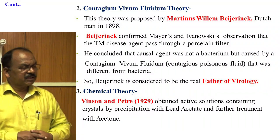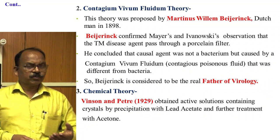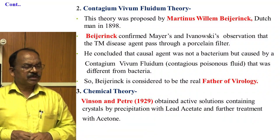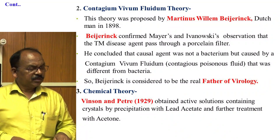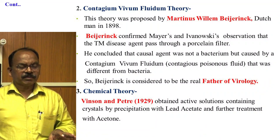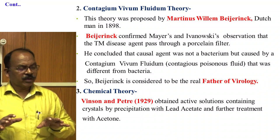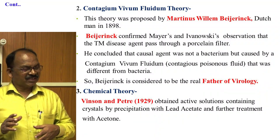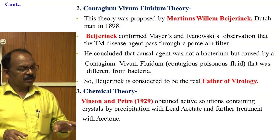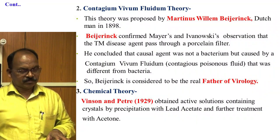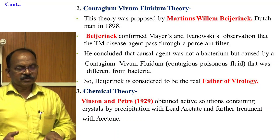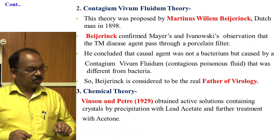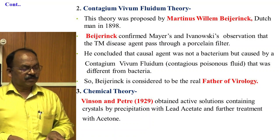The second theory was the Contagium Vivum Fluidum theory, proposed by Martinus Willem Beijerinck, a Dutch man, in the year 1898. Beijerinck confirmed Mayer and Ivanovsky's findings that the tobacco mosaic disease agent passed through a porcelain filter, and concluded that the causal agent was not a bacterium but a Contagium Vivum Fluidum — a contagious living fluid different from bacteria. So Beijerinck is considered to be the real father of Virology.